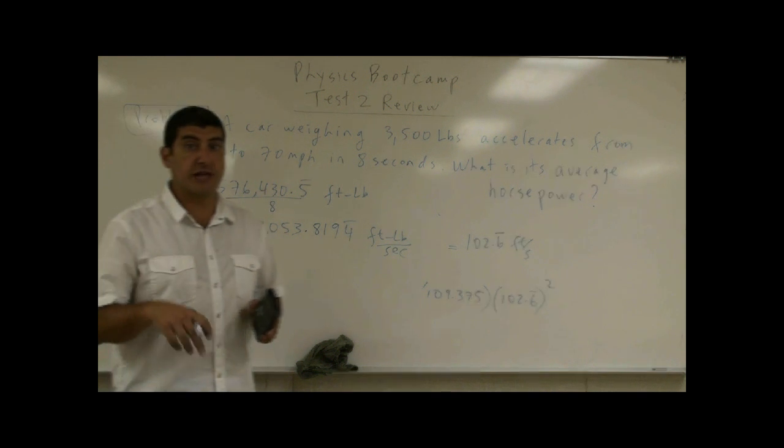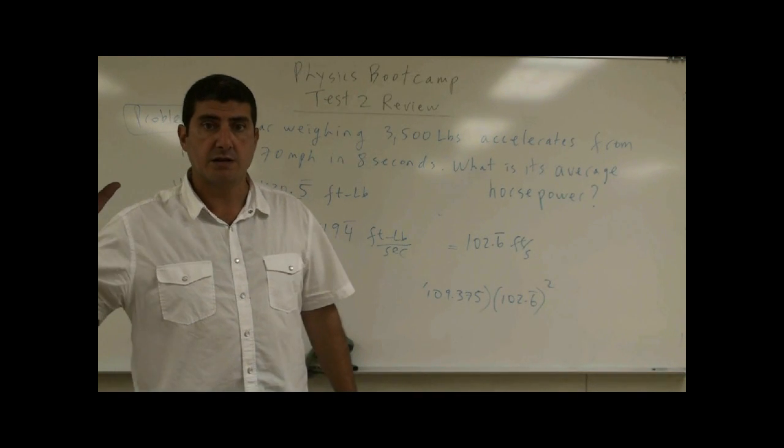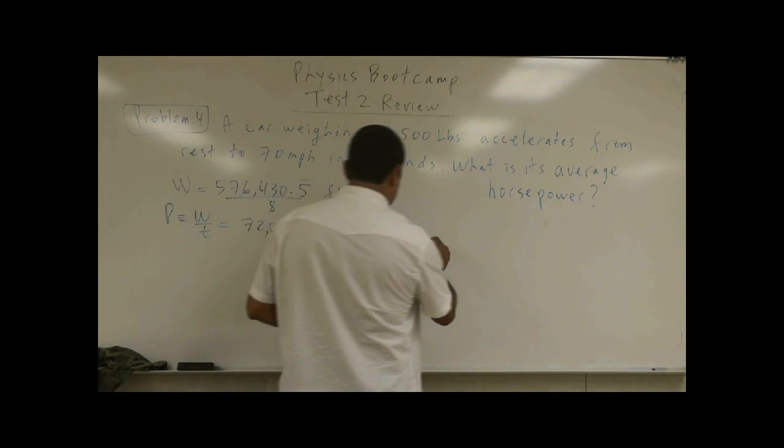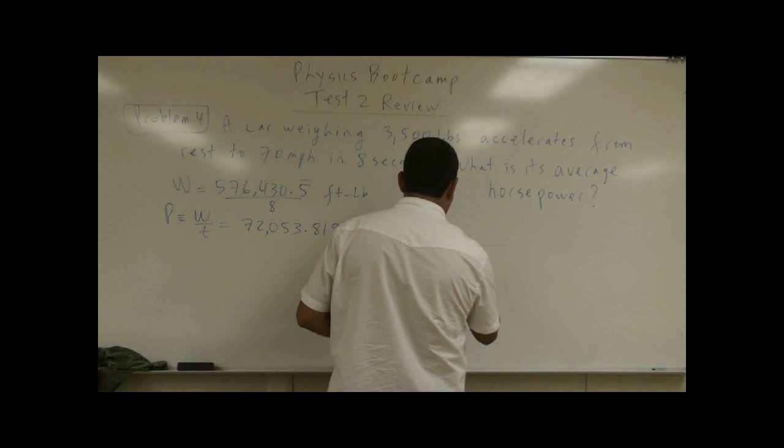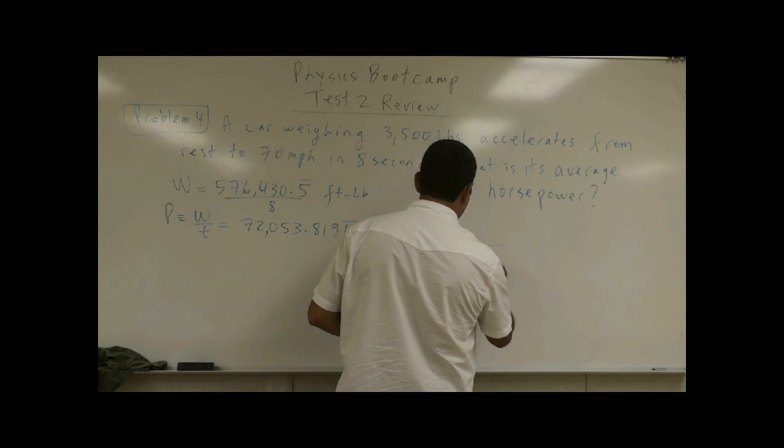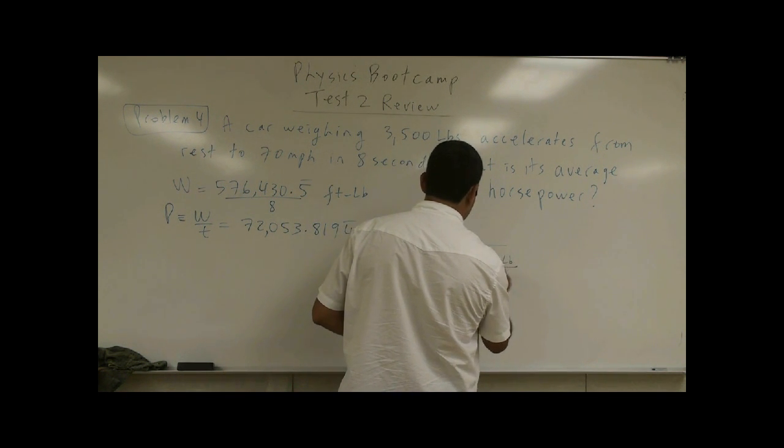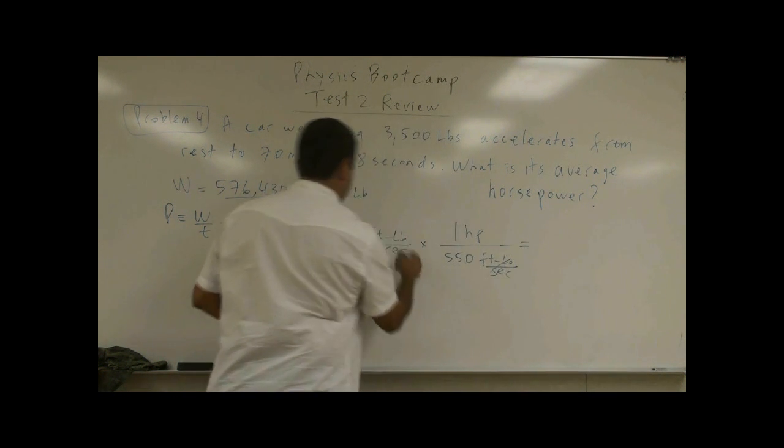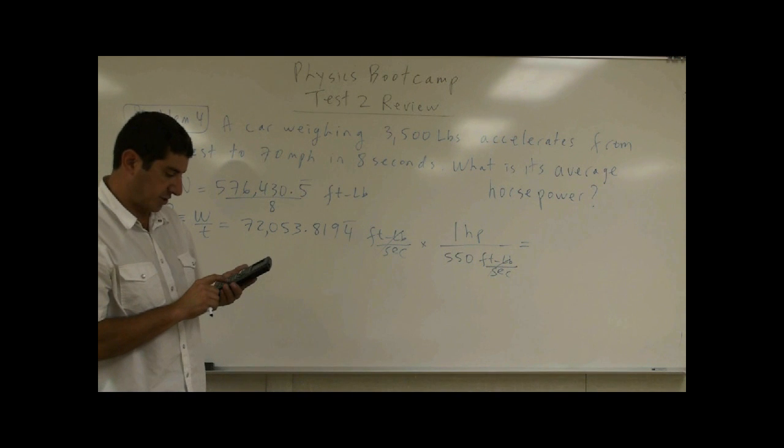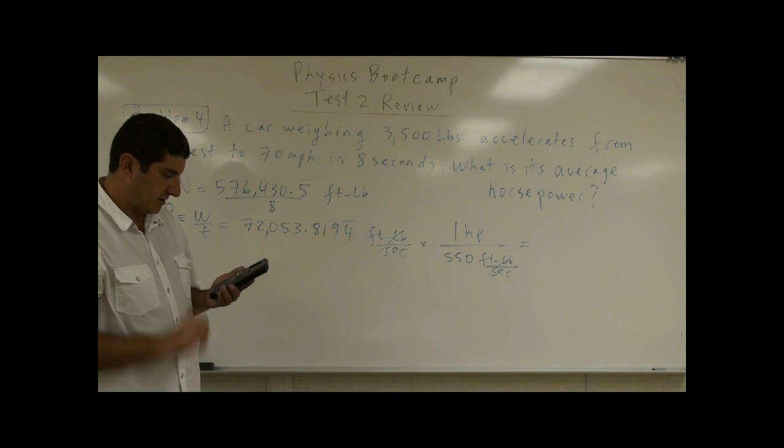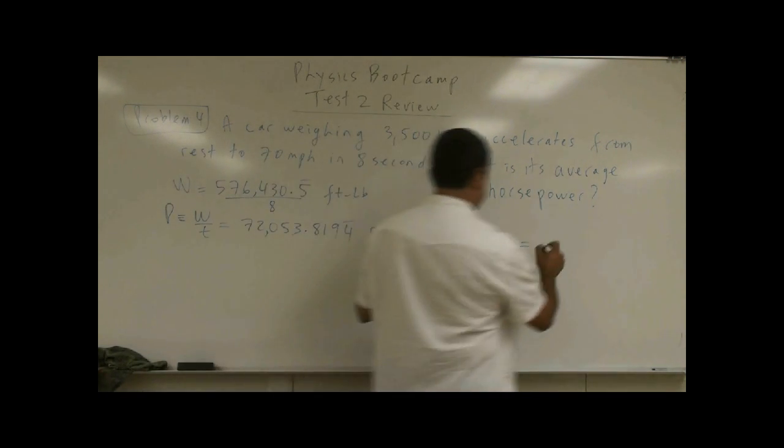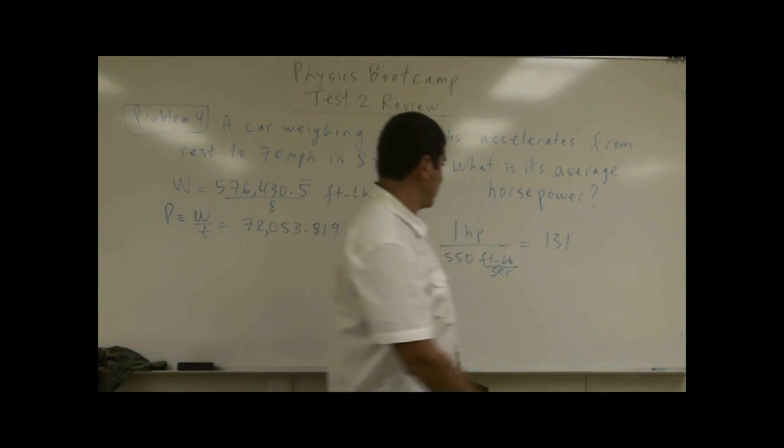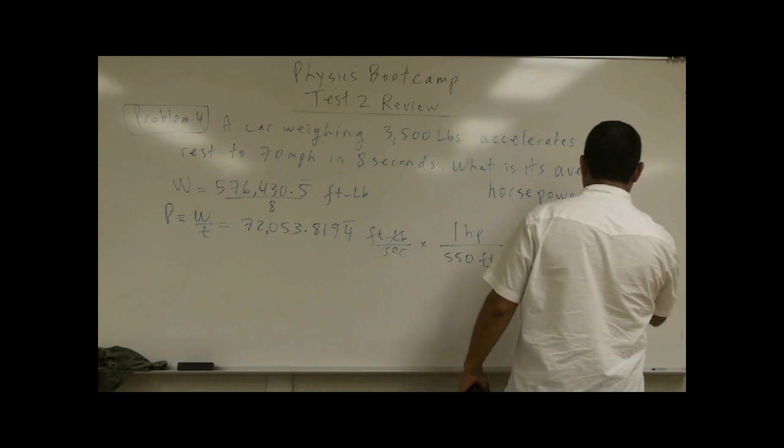Earlier I told you that 550 foot pound per second is one horsepower. So now we're going to use that 550 conversion. 550 foot pound per second is one horsepower. And foot pound per second will cancel. Divide by 550, you get 131.00. So pretty much 131 horsepower.